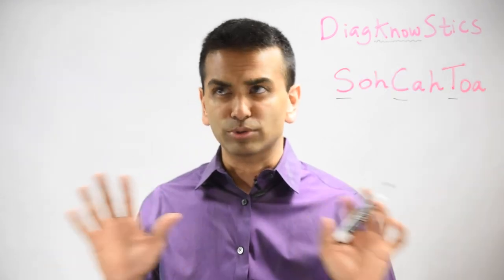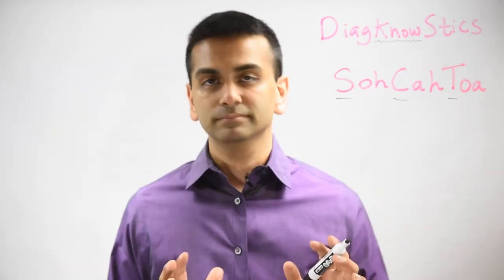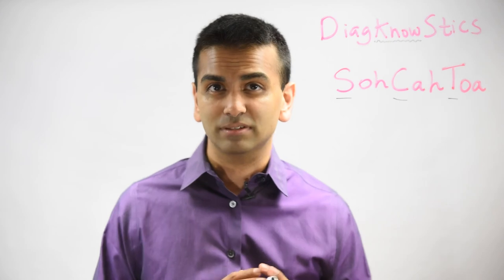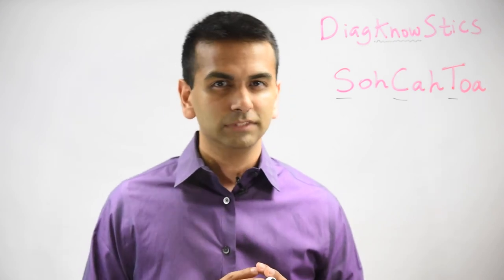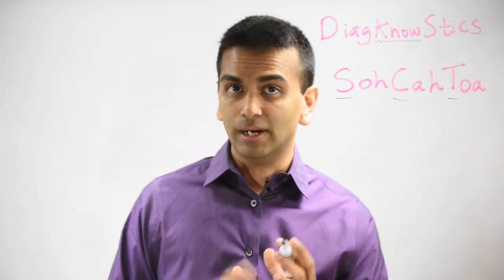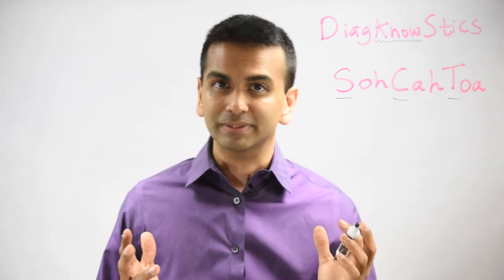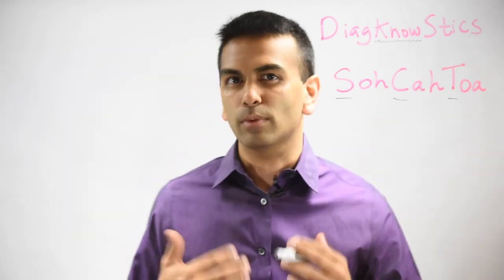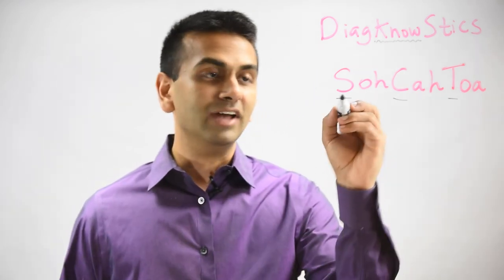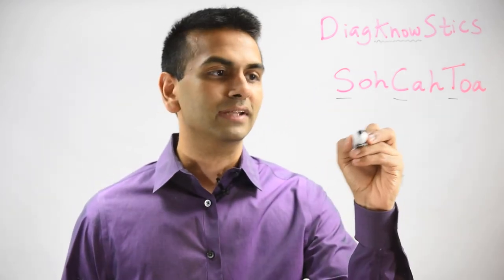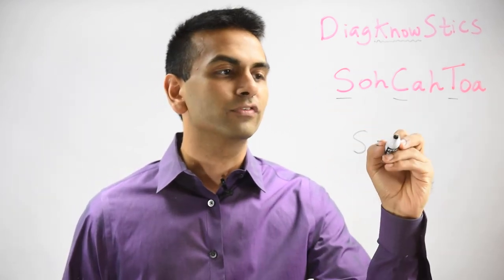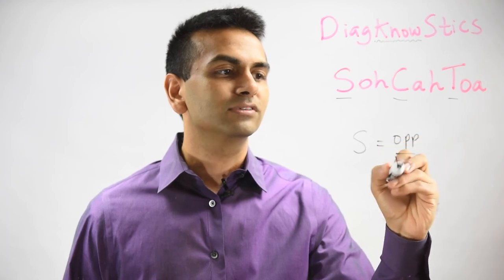First let's talk about trigonometry. It's really sine, cosine, tangent. Now you might have heard of SOHCAHTOA. Here's really what that is — that's just a way to remember which one is which. Sine, which starts with an S, is opposite over hypotenuse.